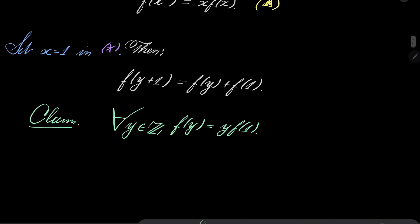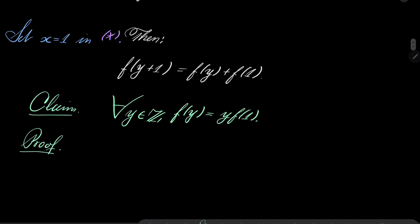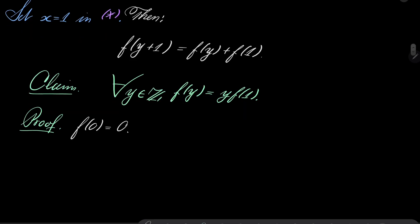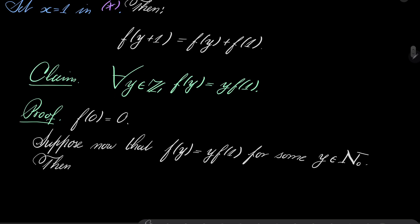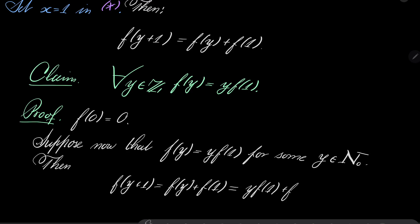I will prove it by induction. Starting with 0: f of 0 equals 0 equals 0 times f of 1, so it holds. Now suppose that f of y equals y times f of 1 for some natural number y. Then, by our equation, f of y plus 1 equals f of y plus f of 1, which equals y times f of 1 plus f of 1, which is of course y plus 1 times f of 1. So we have demonstrated that our equation holds for natural numbers.